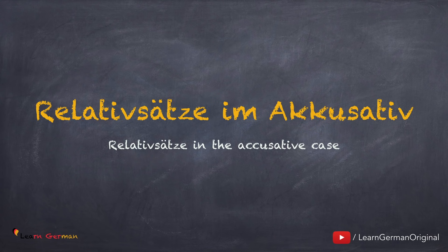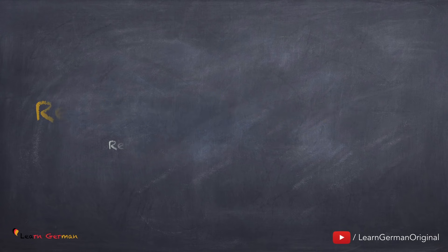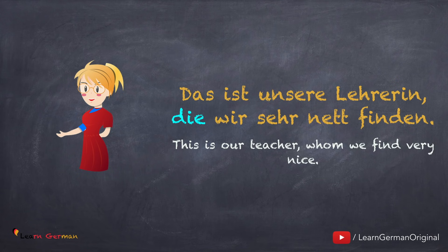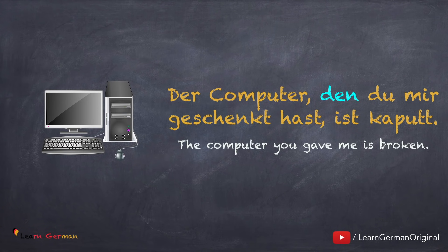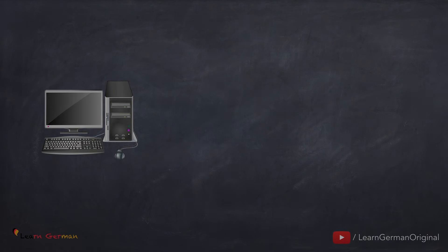Hier sind ein paar Beispiele: Das ist unsere Lehrerin, die wir sehr nett finden. Hast du mein Buch gesehen, das ich gestern gekauft habe? Der Computer, den du mir geschenkt hast, ist kaputt. All the articles marked here in blue are Relativpronomen im Akkusativ.